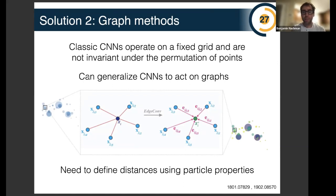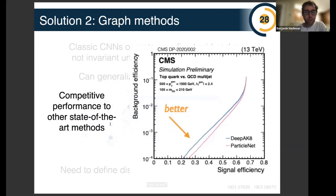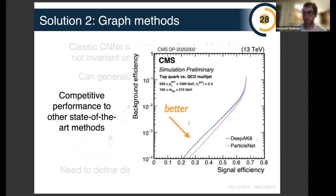There are other approaches: Deep Sets acts on point clouds and doesn't know about geometry, but you can use information about distances between inputs as a graph, applying a graph neural network. This is like a convolutional network except it's not on a fixed grid — you can have any adjacency matrix connecting nodes with edges and apply a convolution-like operator to the graph. This also works very well and has basically state-of-the-art performance in tasks like tagging a Lorentz-boosted top quark versus quark and gluon jets.